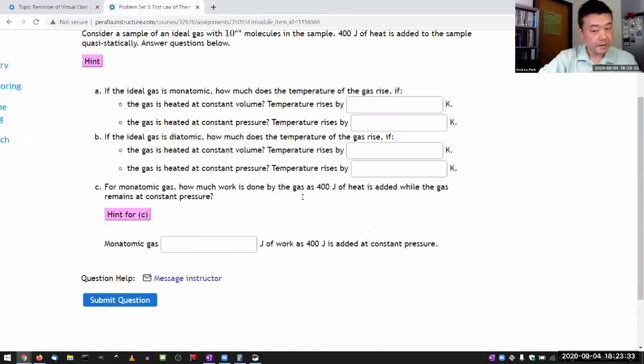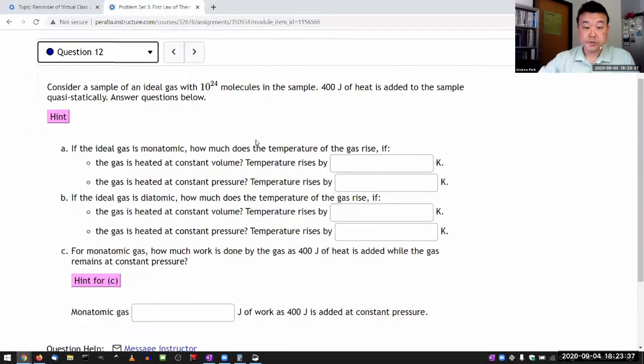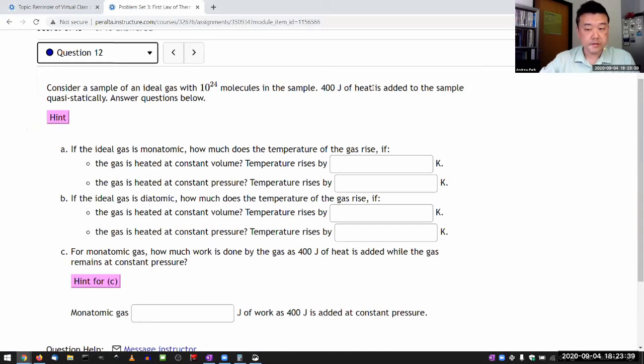Starting with question 12, it says consider a sample of ideal gas. It says heat is added, answer the questions below. If you just skip to this question, as I more or less did with the test student, then you might feel lost.